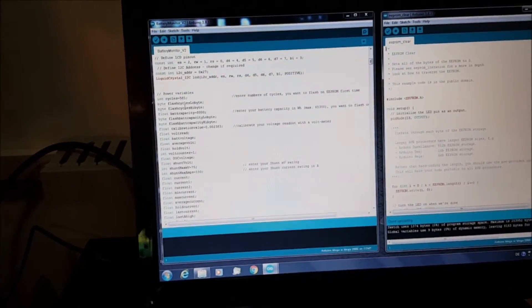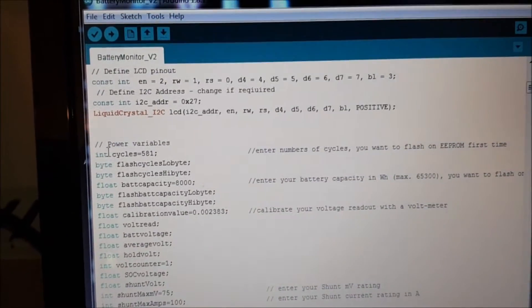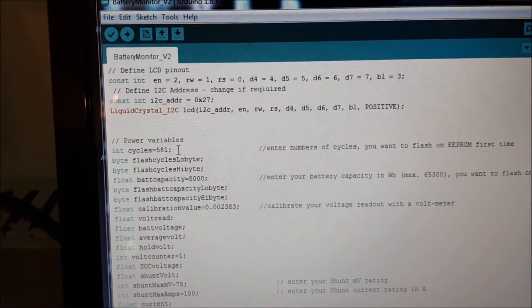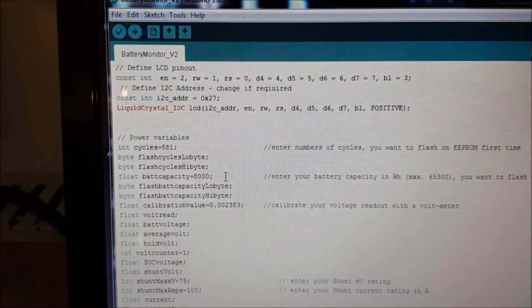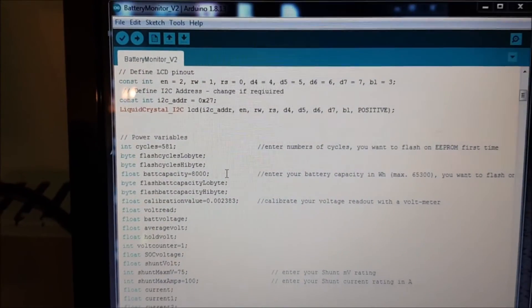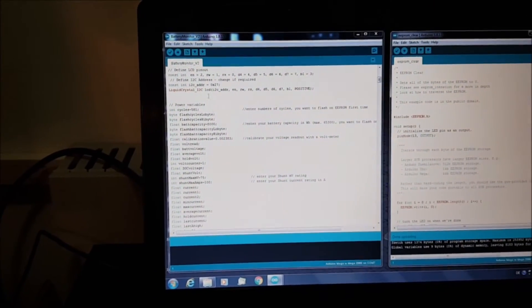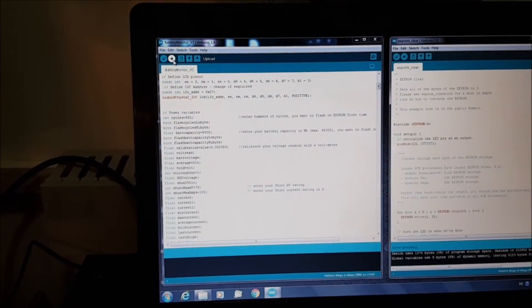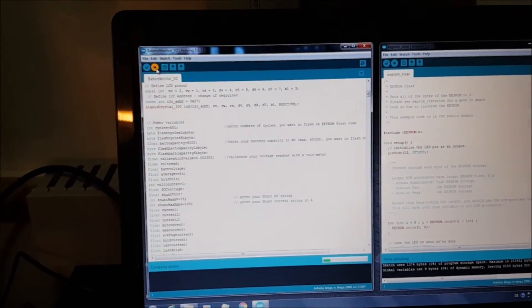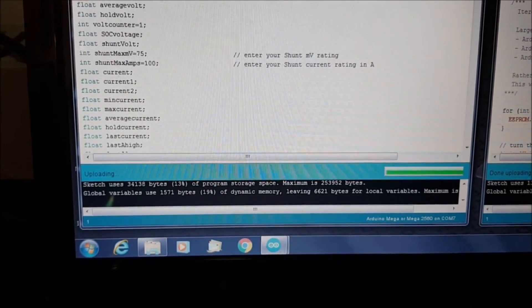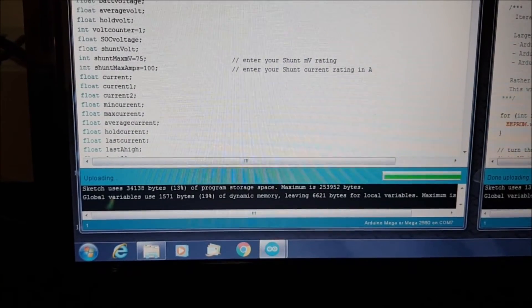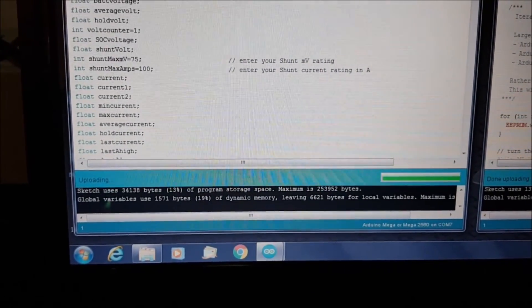So okay, let's upload the EEPROM clear program first. Okay, so that is done, now the EEPROM is clear. In the variables I have now set my cycles from before, and my estimated battery capacity which I was using is 8000 watt-hours. This will now be flashed on the EEPROM. Okay, let's upload this version 2 software.